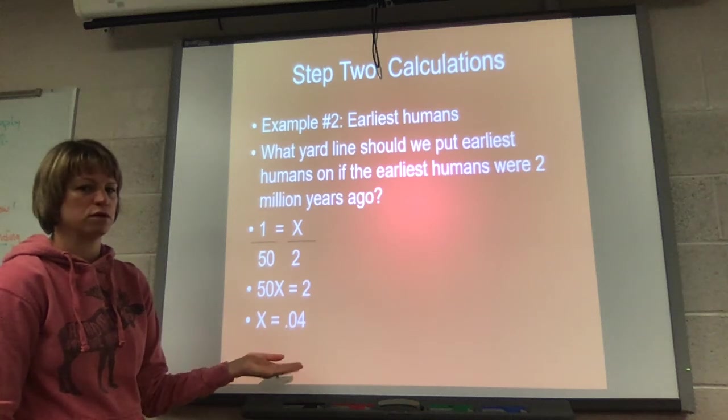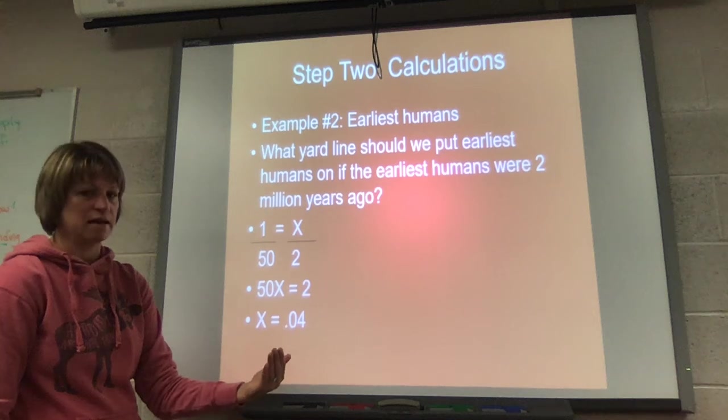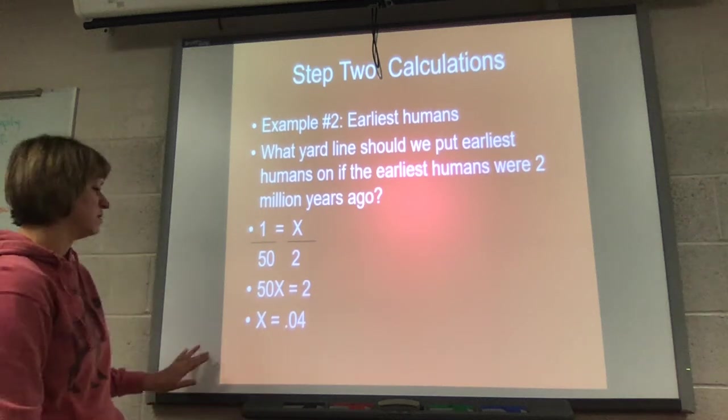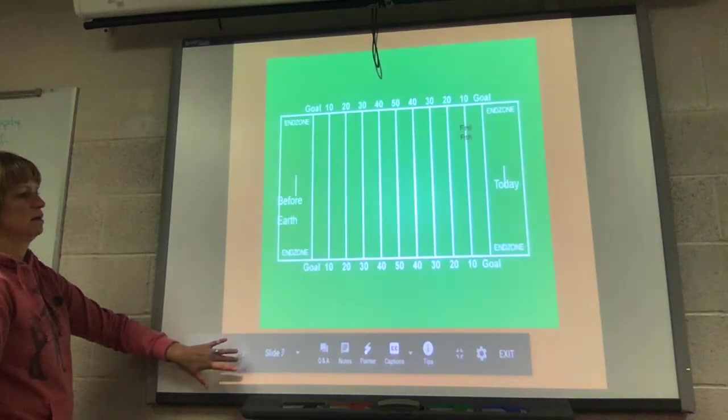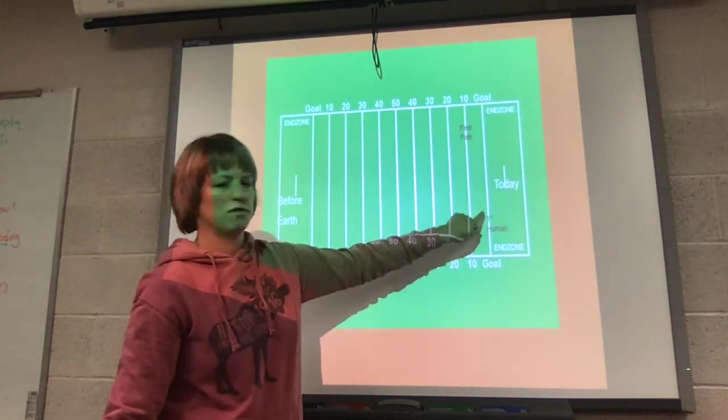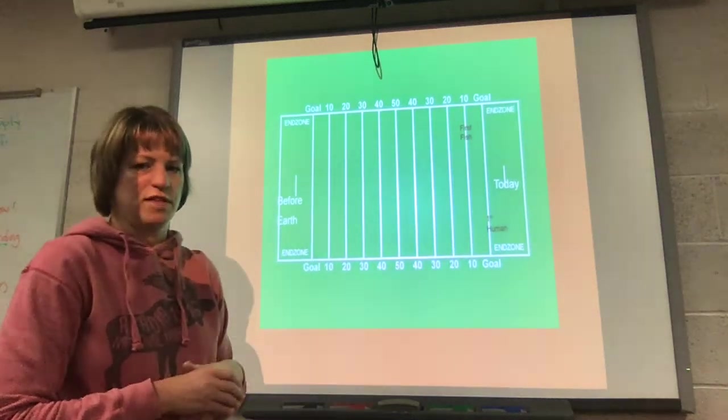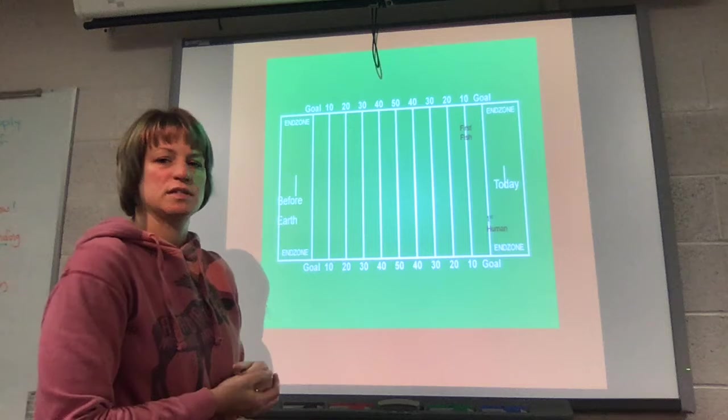So now how the heck am I supposed to put that on the field? Well let's think about this. Is 0.04 closer to the one yard line or the zero yard line? And the answer is way closer to the zero. So us humans should be in here, it's popping up. See how I put the one for first right on that goal line? And it's barely off that goal line.